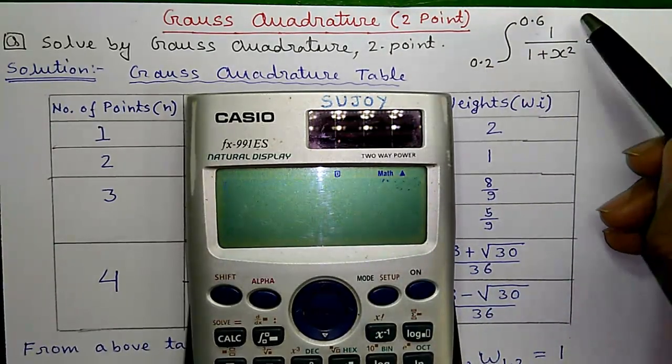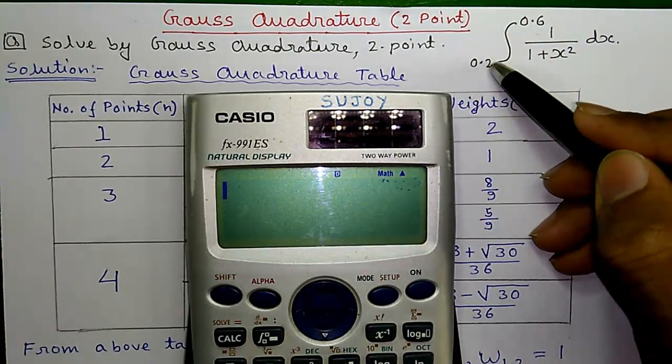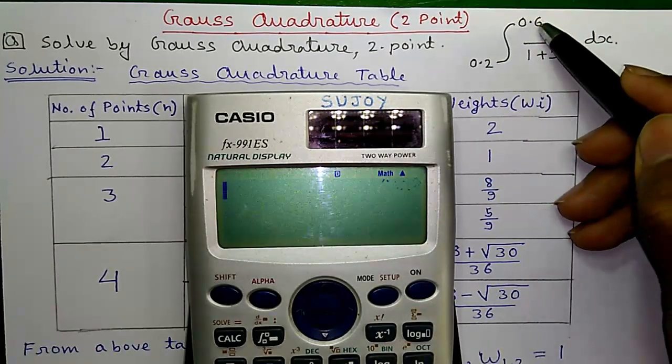So, here is our question. Find out the integration of 1 divided by 1 plus x squared dx with lower limit of 0.2 and upper limit of 0.6.